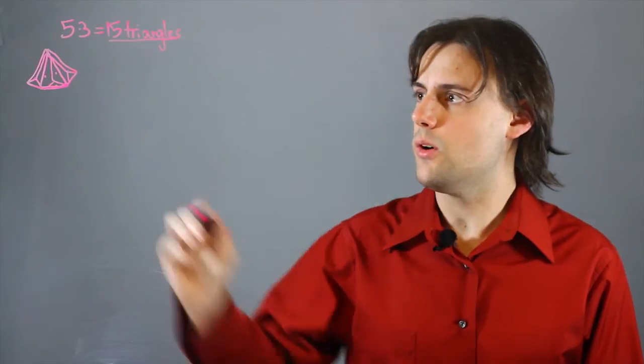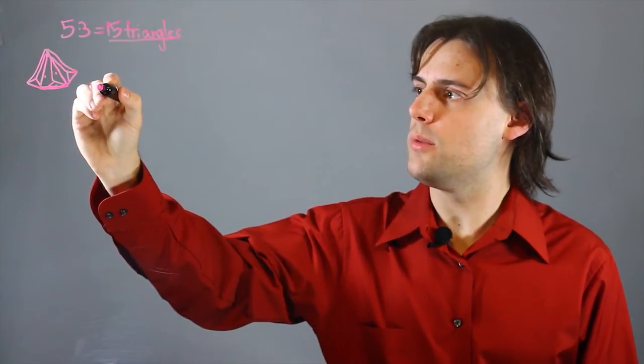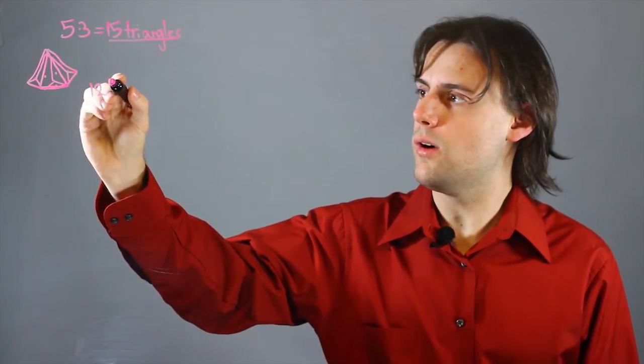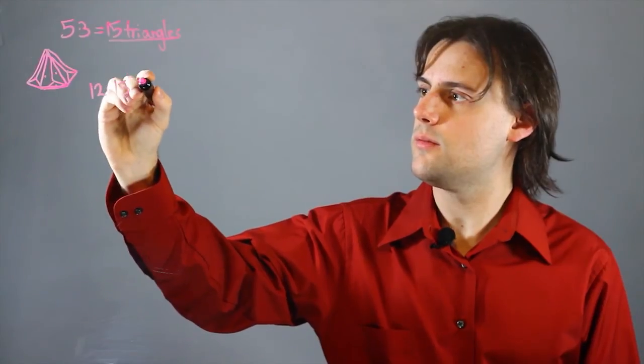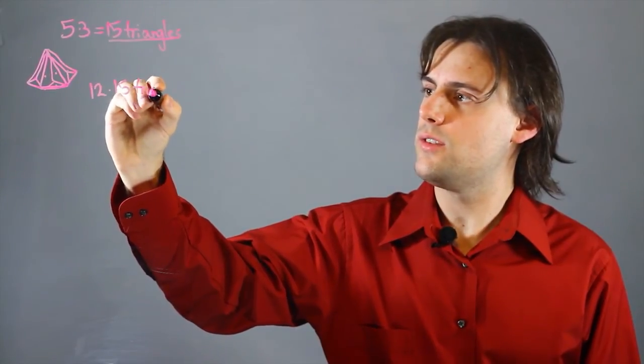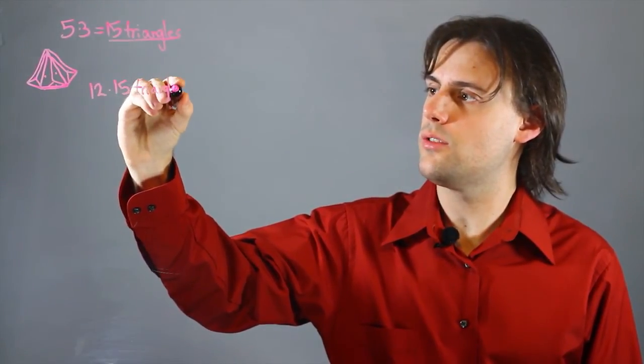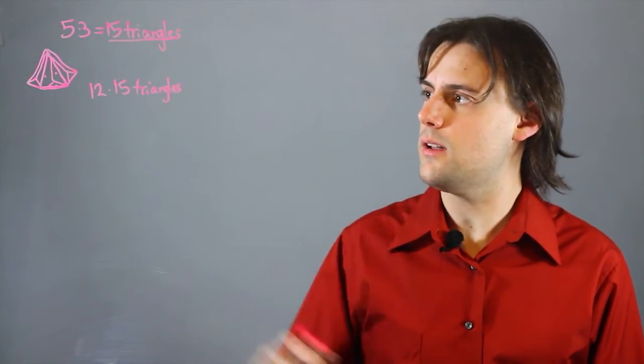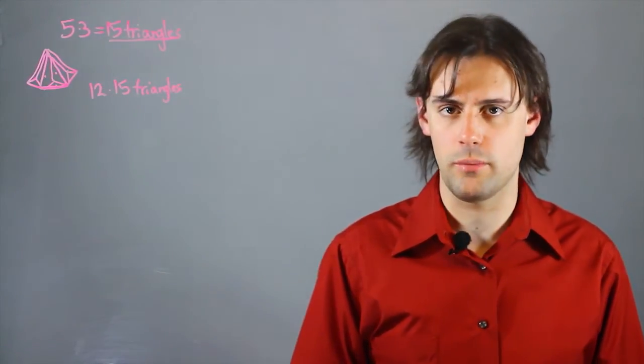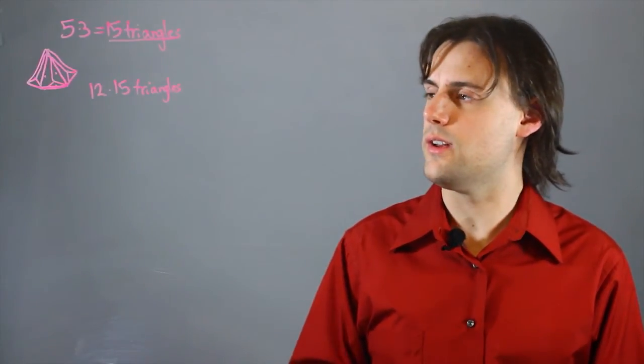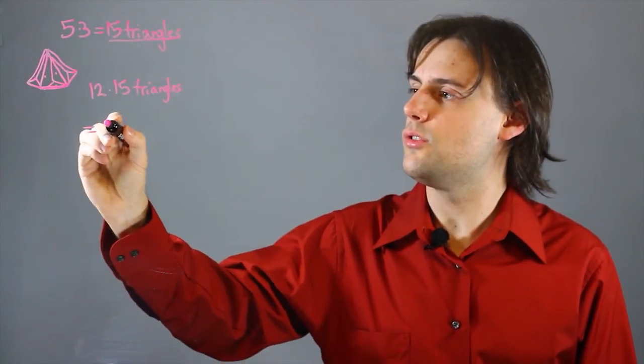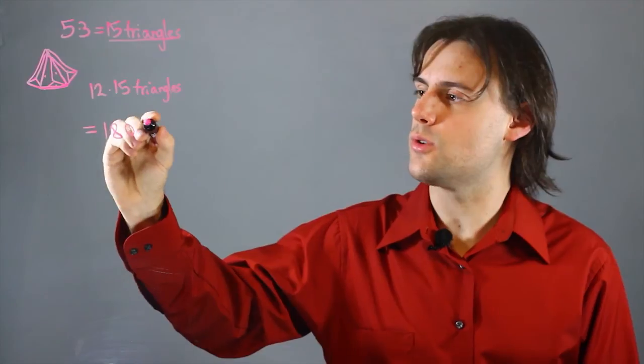So all we have to do is multiply 12 with 15, where 15 denotes the number of triangles per pentagramic pyramid, and 12 is the total number of pyramids in the figure. And this is equal to 180 triangles.